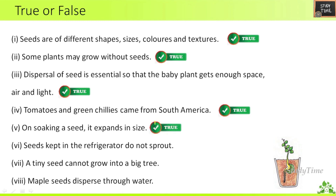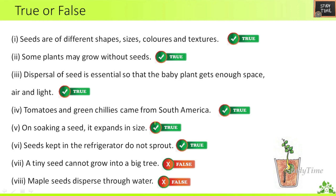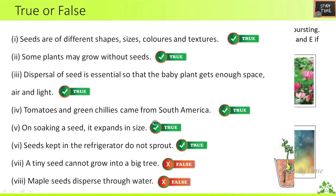On soaking, a seed expands in size — True. Seeds kept in the refrigerator do not sprout — True. A tiny seed cannot grow into a big tree — False. Maple seeds disperse through water — False; we have seen that they disperse through air.